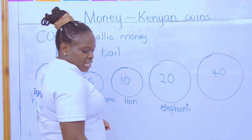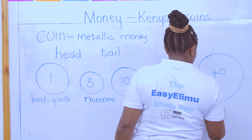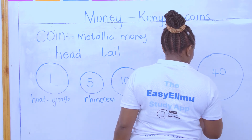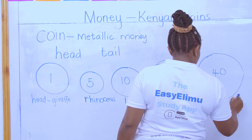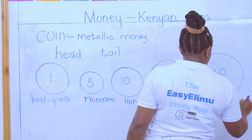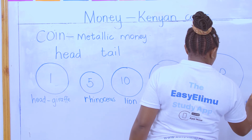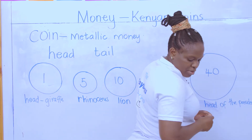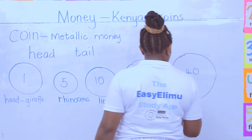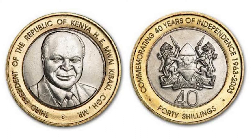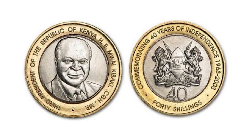The 40 shilling coin still has the head of our first president — the head of the president. We are yet to find out more about it. These 40 shillings, I don't have it yet, so we are not going to talk about it so much. But in the next lesson, if I get the coin, I'll be able to show you what it has. But the old one still has the head of the president.